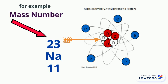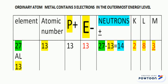Aluminum (Al) is another example here. Its atomic number is 13, written three times in the atomic number cell, the proton cell, and the electron cell. What about the neutrons? How can we get the number of neutrons if we have the atomic number and mass number? Neutrons equal mass number minus atomic number, which is 27 minus 13, equals 14.